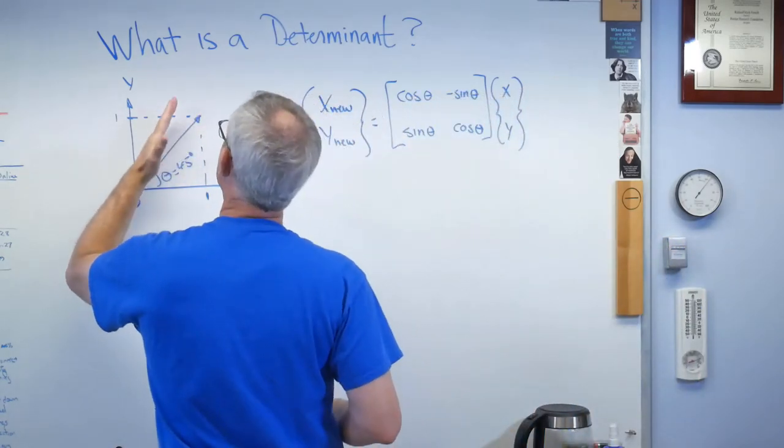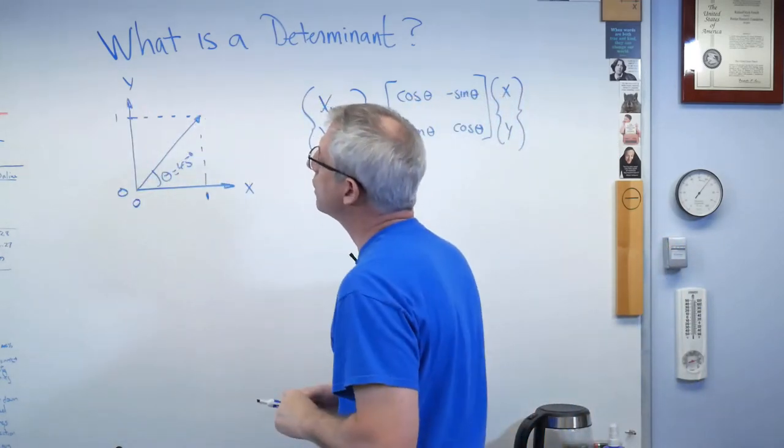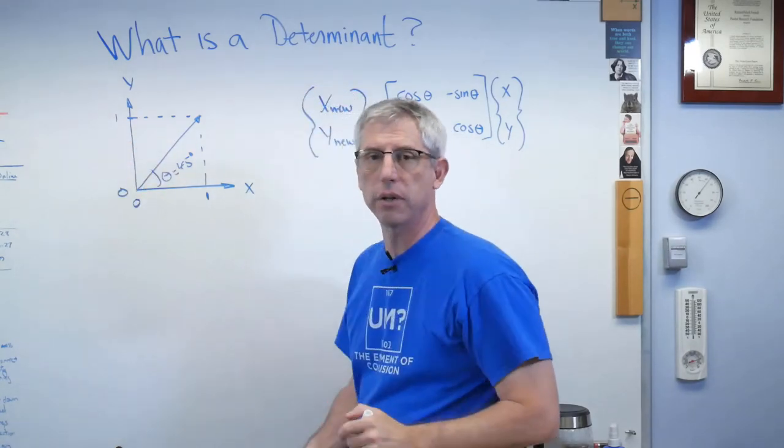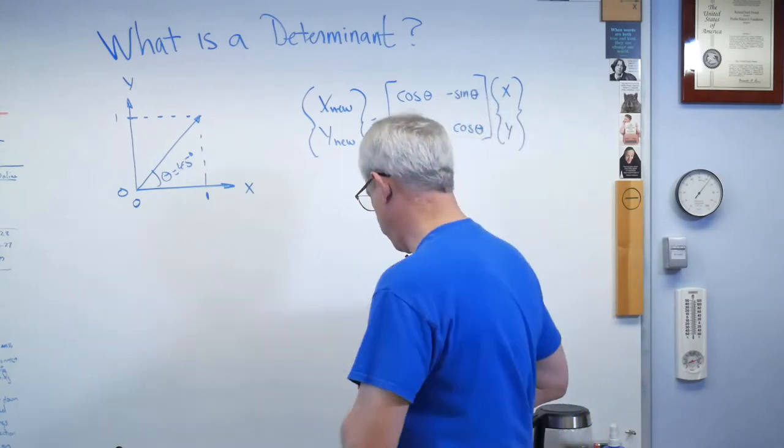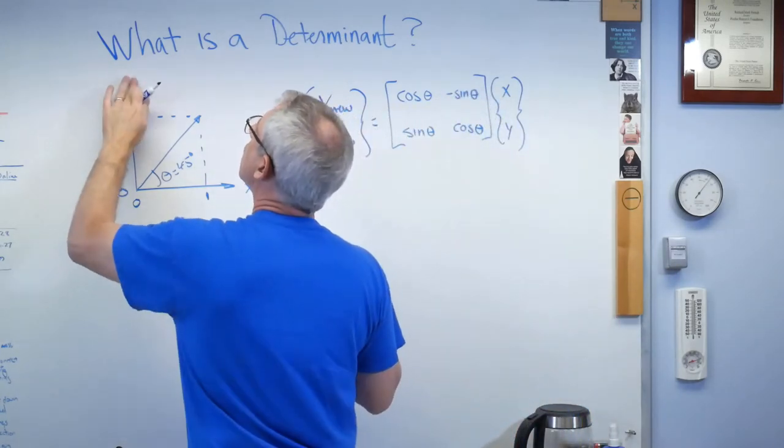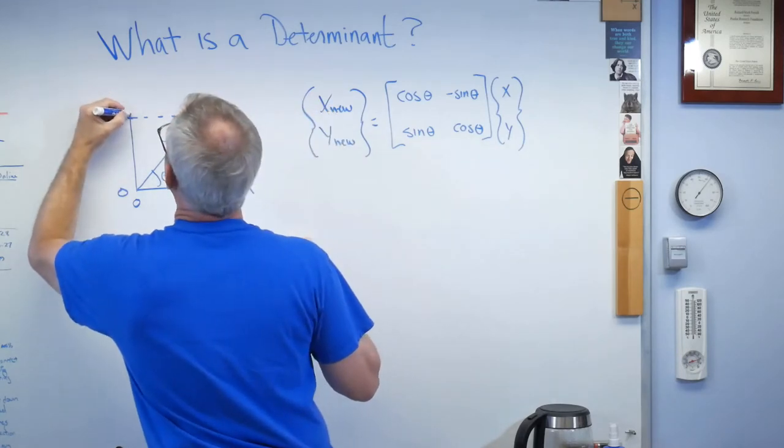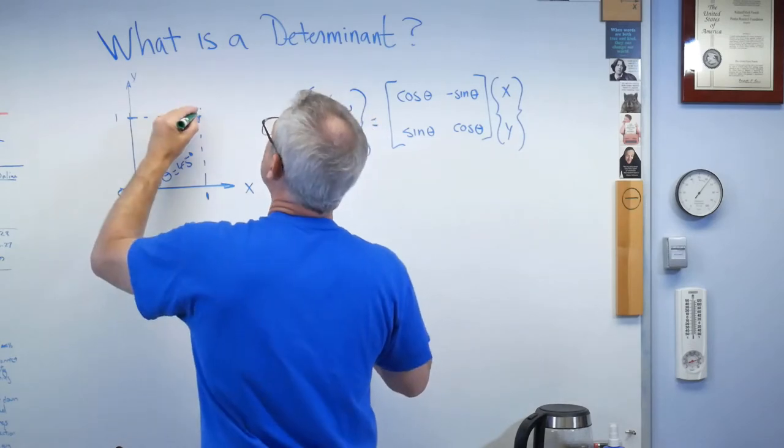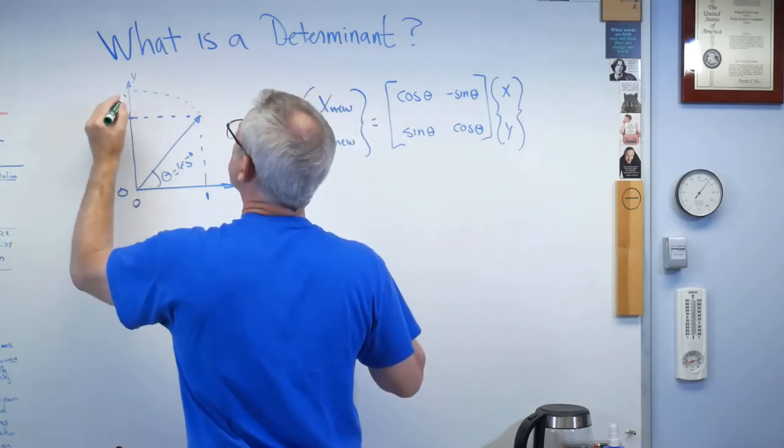This is a transformation. You start with one vector, you get another one, and this particular transformation is what you get when you rotate a vector. So, if I start here, if I wanted to rotate that 45 degrees, pi over 4 radians if you prefer, I'm going to rotate this until it's vertical. Well, what's it going to look like when I rotate it? Now, let's do this. Let's stretch this axis out a little bit and draw a picture.